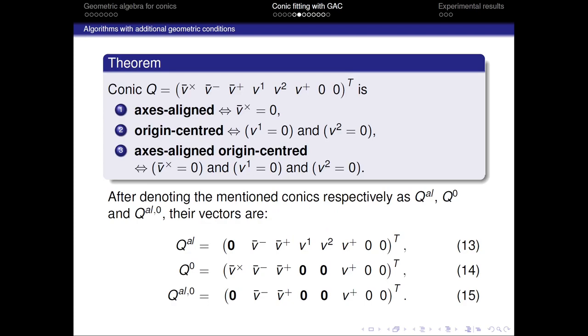Namely, the first one is that the conic has its axis aligned with coordinate axes. The second one is that the conic has its center point at the coordinate system origin. And the third one is when the conic satisfies both two previous conditions. Consequently, we described three conic-fitting algorithms, each of them resulting in either of the conics with following additional geometric conditions.